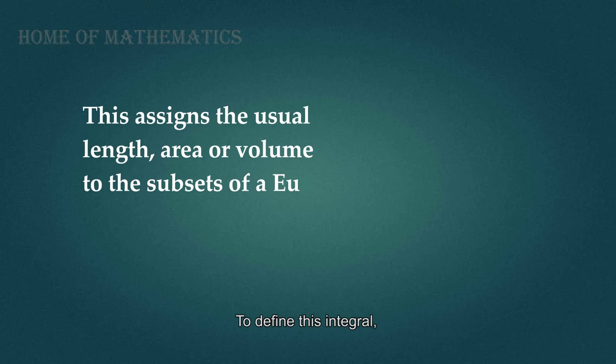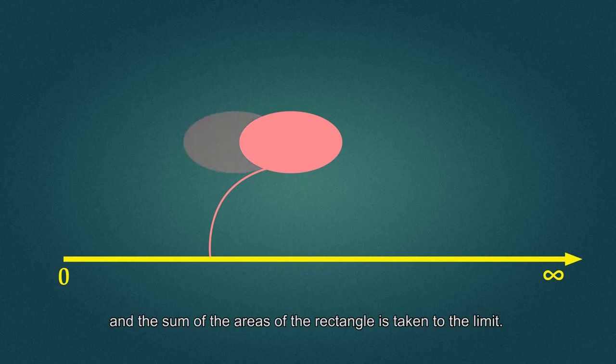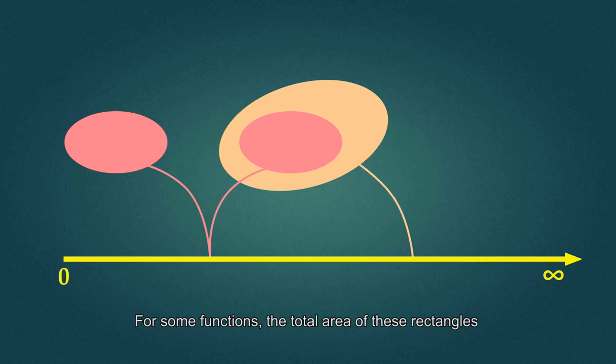To define this integral, the area under the graph is divided into smaller and smaller rectangles, and the sum of the areas of the rectangles is taken to the limit. For some functions, the total area of these rectangles does not approach a single number, and as such they have no Riemann integral.